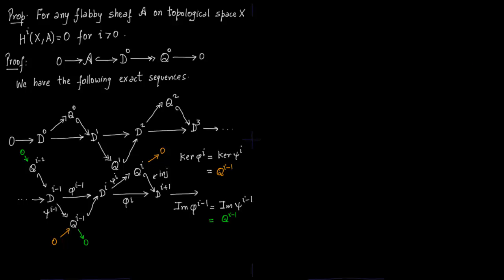Now when we talk about HI, we are talking about the cohomology groups of the resolution of sheaf A. Sheaf A is resolved into D0, D1, D2, D3 and so on. This is called the Godement resolution. The definition of HI is kernel of PhiI over image of PhiI minus 1. So this is nothing but QI minus 1 over QI minus 1, and this is 0. So we are done.